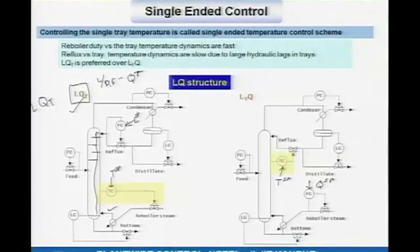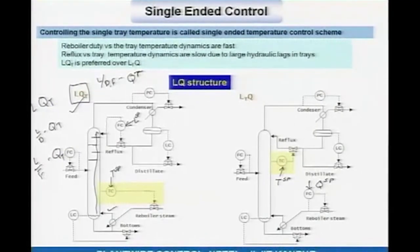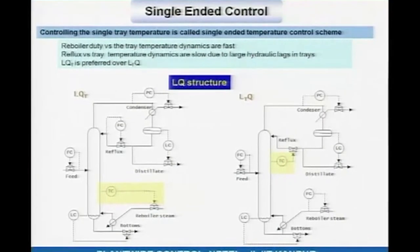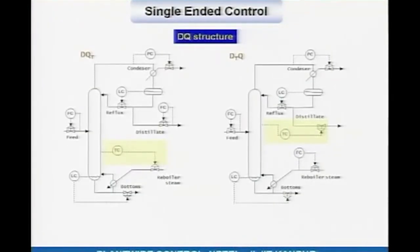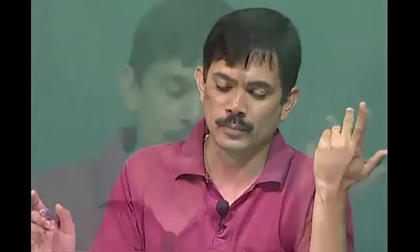So because of these hydraulic lags, it is usually preferred that we do not use the reflux for control. Instead, we use reboiler duty — because if I change the reboiler duty, tray temperature responds almost immediately. If the response is immediate, I can control that tray temperature tightly, and tighter temperature control means tighter product purity control. Therefore, LQT is preferred over LTQ. This is called single-ended control — I am controlling one tray temperature, not two tray temperatures.